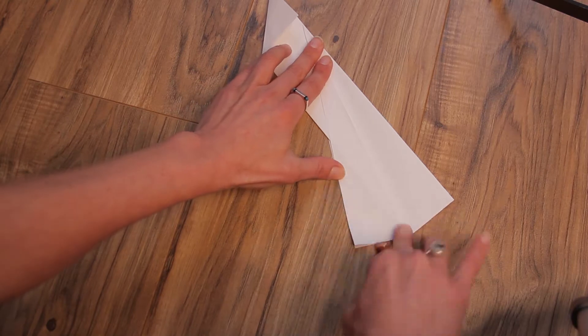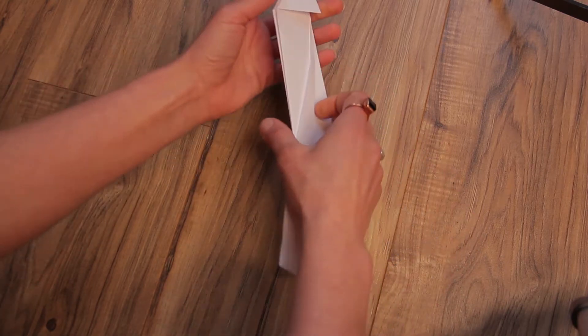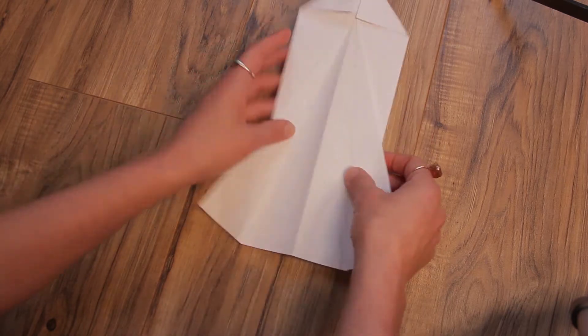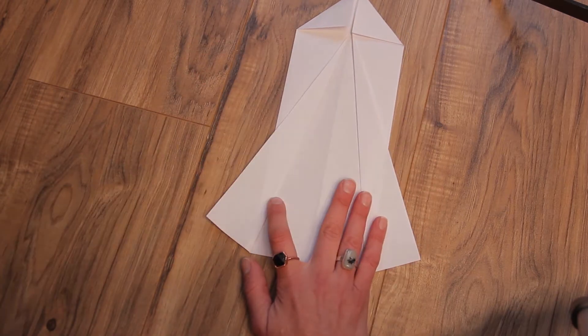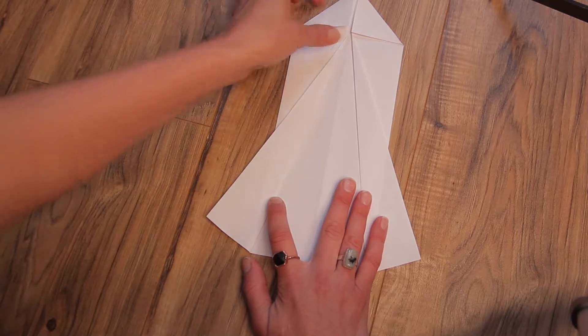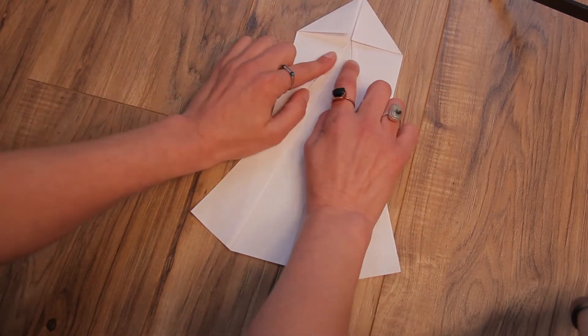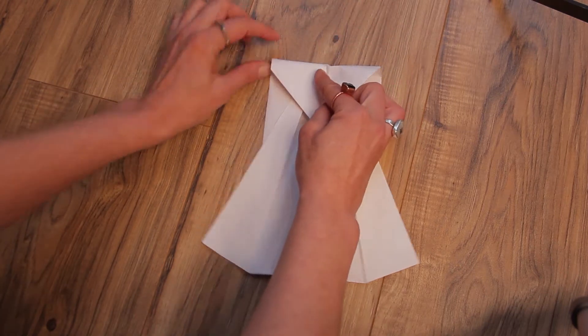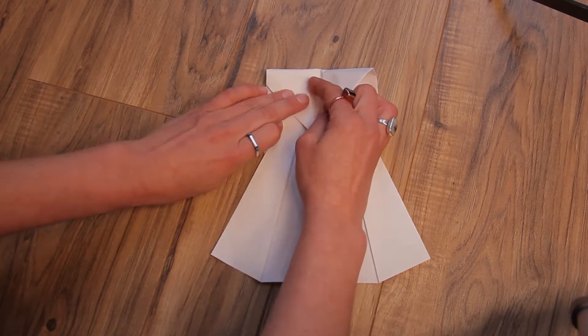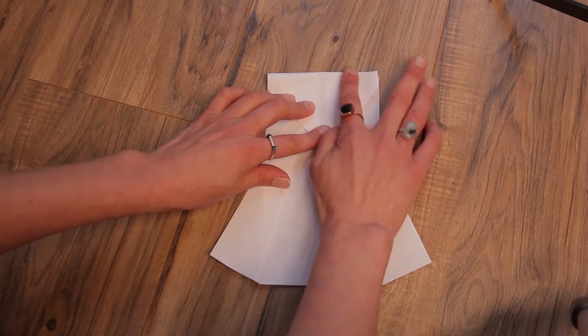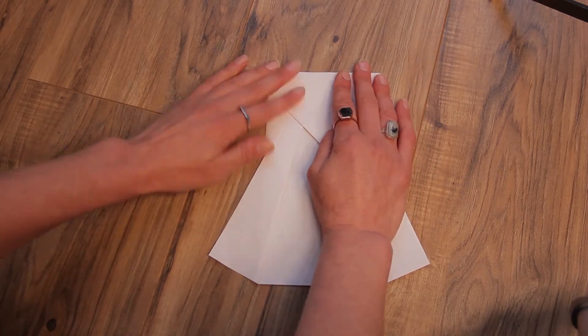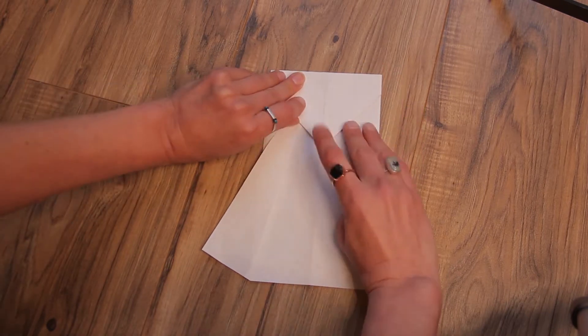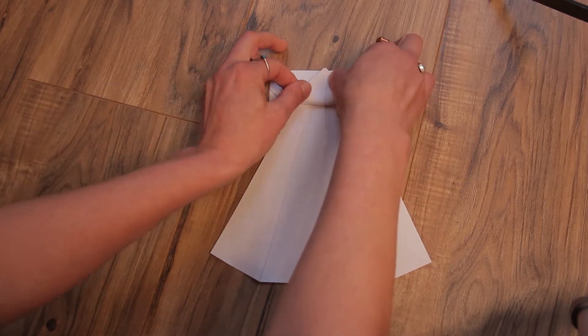Now on to step six: open this up and fold this top part about an inch from here so that there's about an inch on either side here. Fold it down. And then after that we're going to pull back up where this point lines up with the top.